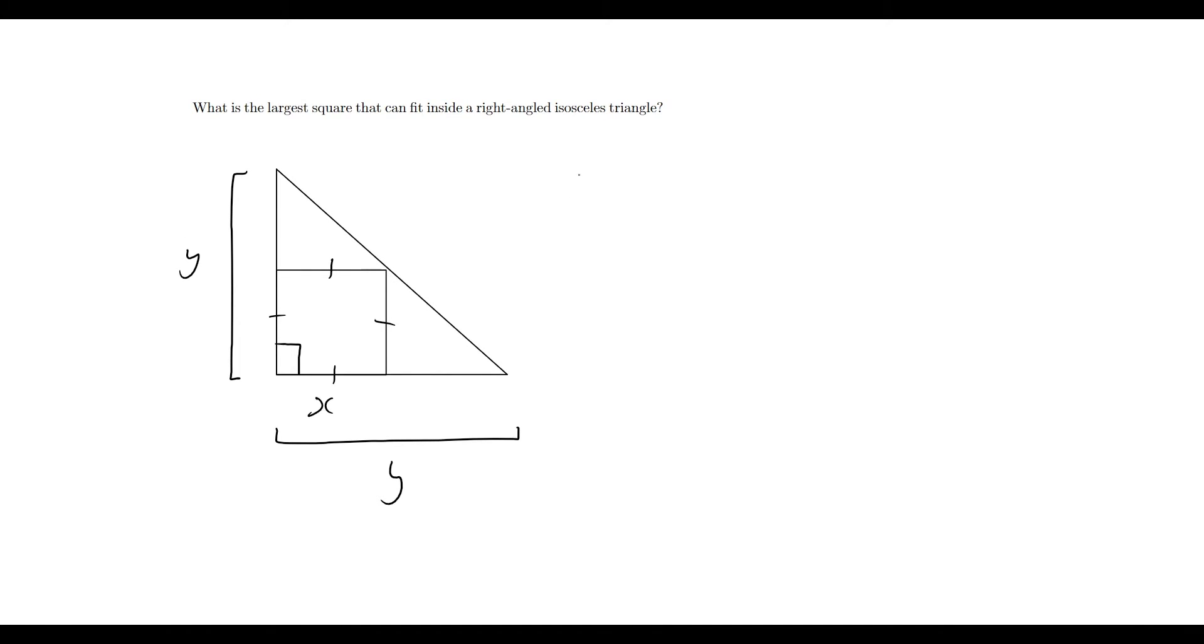And now we can use Pythagoras's theorem, so a² + b² = c². Except here, of course, we are using y and y to figure out this hypotenuse length here. So that ends up being y² + y², well that's equal to 2y², and that's equal to c². So we can say clearly that this length here, this hypotenuse, is going to have a length of √2y. Okay, fantastic.